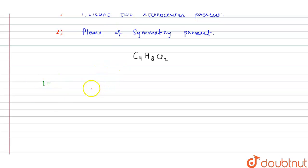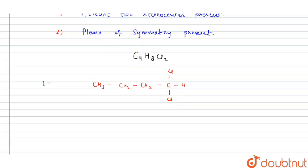The first isomer is CH3-CH2-CH2-CHCl2 — one hydrogen and two chlorines on the last carbon. Is this a meso isomer? No, because neither carbon is a stereocenter; both have two hydrogens attached, meaning two identical atoms are connected to the carbon. So this is not a meso isomer.